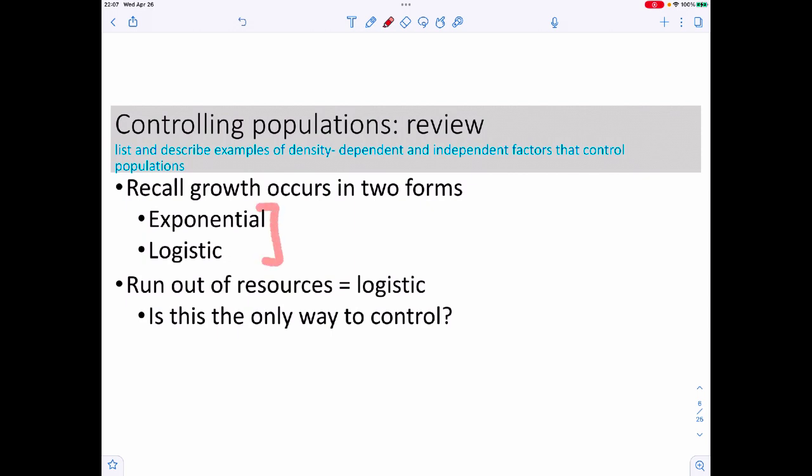When we need to control populations, it's important to consider the two forms: exponential and logistic growth. Exponential growth goes straight up, logistic growth levels off over time. We know this happens because we ran out of resources. The question is, is that the only thing you can do? The answer is, of course not.